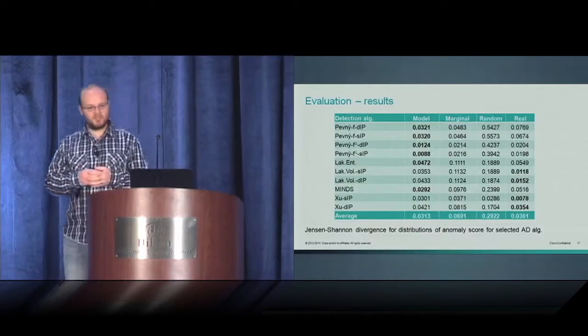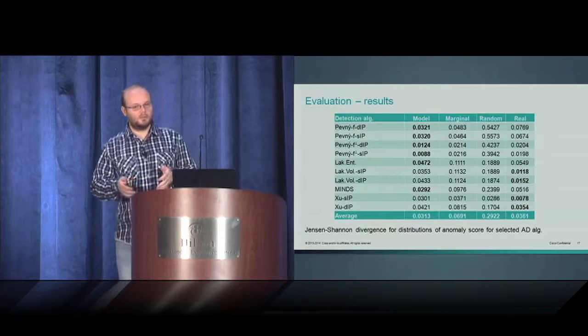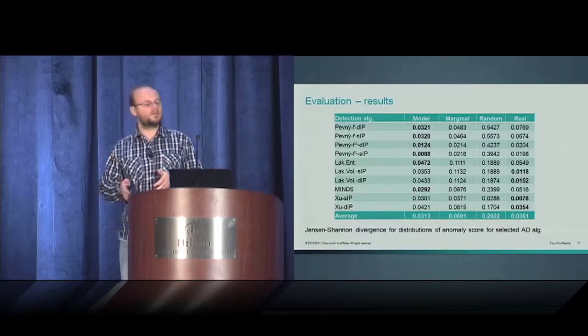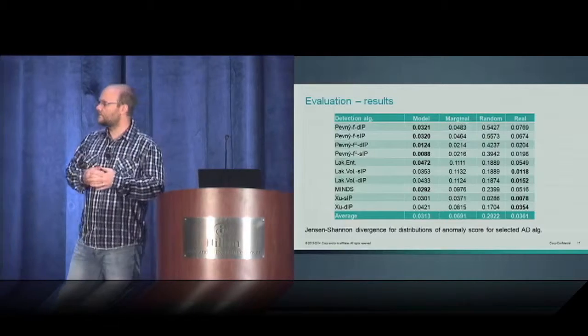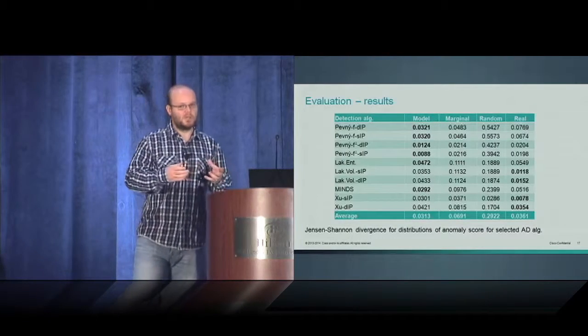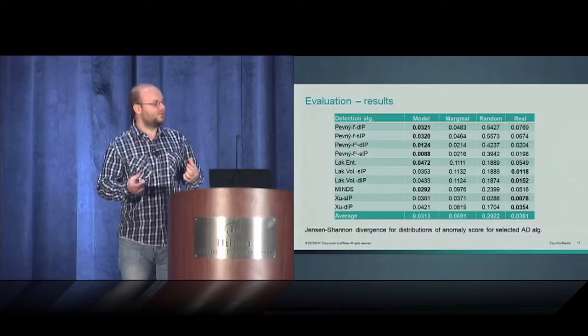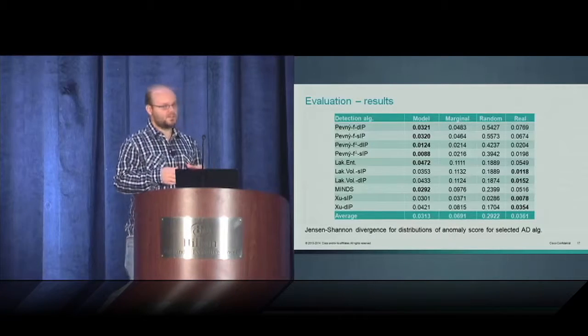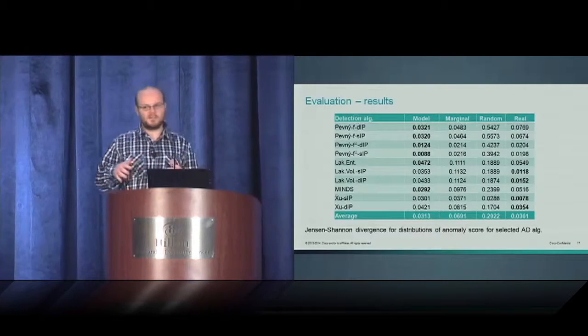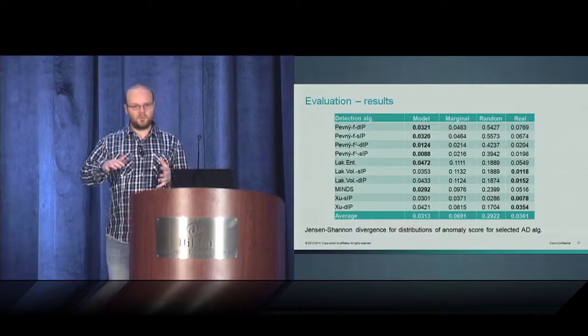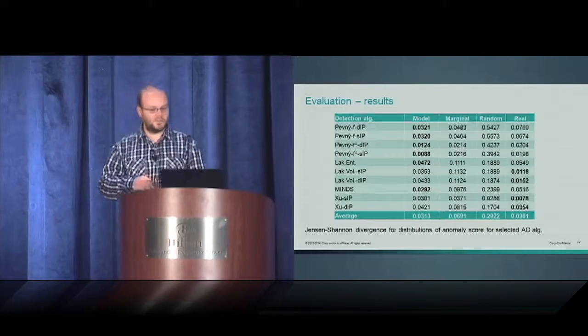Here are the results. In the first column is the value of the Jensen-Shannon divergence for the time-variant joint probability model. Second column contains the value for marginal model. The last column for the random sampling. And the real column contains the Jensen-Shannon divergence for the real traffic. So we have used two consecutive days, processed it with anomaly detection algorithms, and computed the Jensen-Shannon divergence on the real data for these two days. We can get some kind of boundary that says the data can be closer, but if you are at least this good, it can be used for the evaluation of the anomaly detection methods.